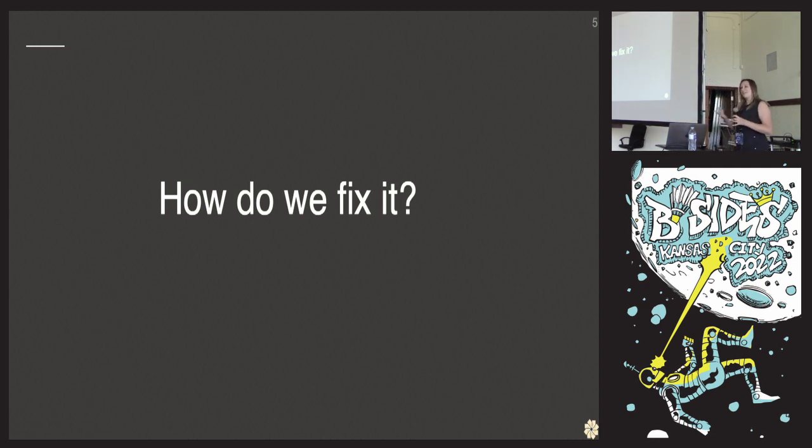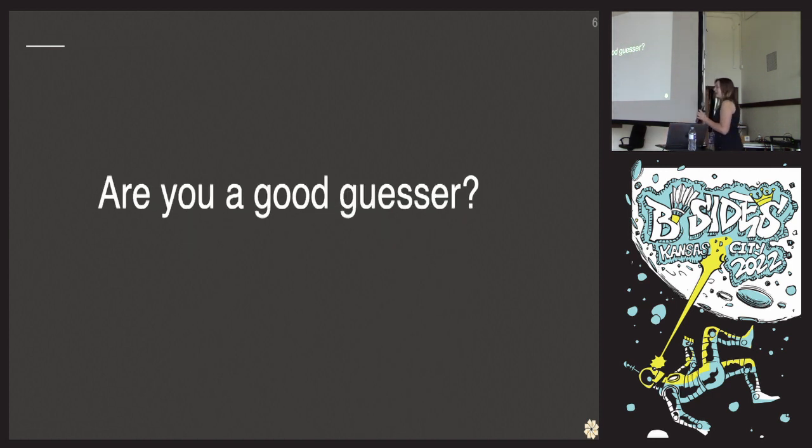But how do we fix that? Now that I've said some of the methods that we're using to understand risk might not be the best statistically, what can we do to fix it? Especially given that we don't have a lot of input data normally. And that's typically why we're using scales like this. Because we feel like we can't get to a granular 4.3% chance of getting breached in the next year because we don't have that input data to know that granularly. So before we get into the method of how to fix it, we're going to do a little experiment. And we're going to figure out, are you a good guesser?